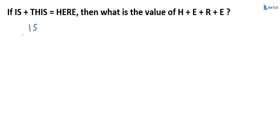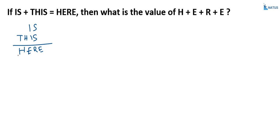IS plus THIS is equal to HERE. So S plus S equals E, I plus I equals R, and we have H, E and T, H. If you observe, these two values are not the same, because we know that each and every letter has a unique value.